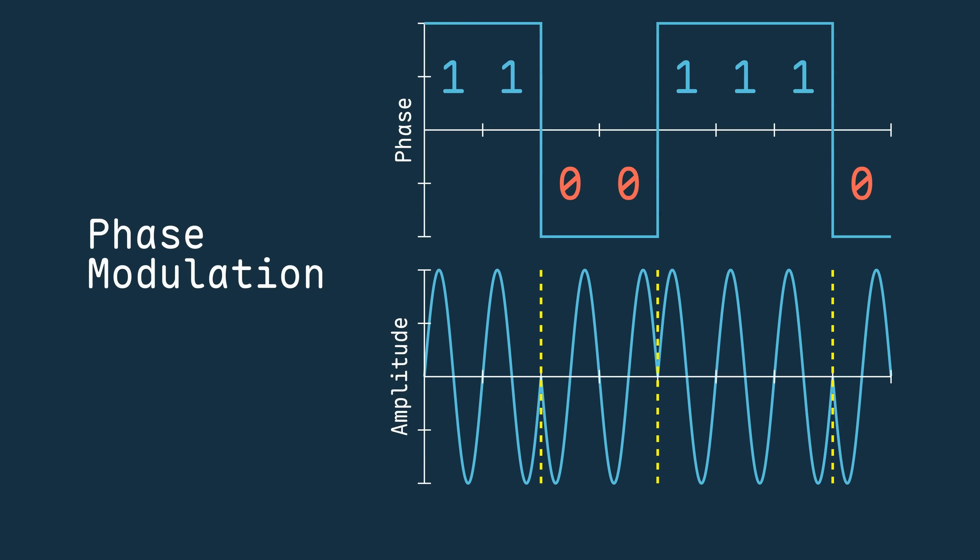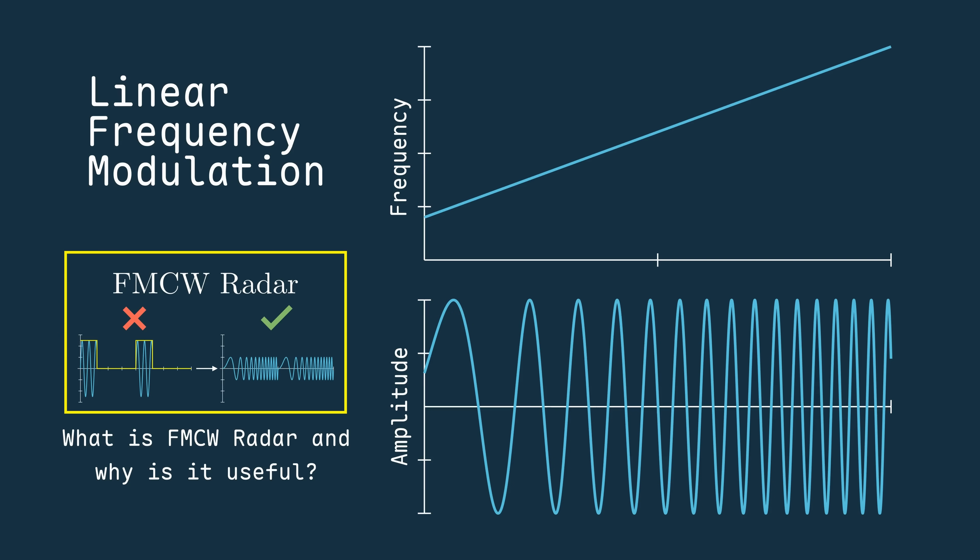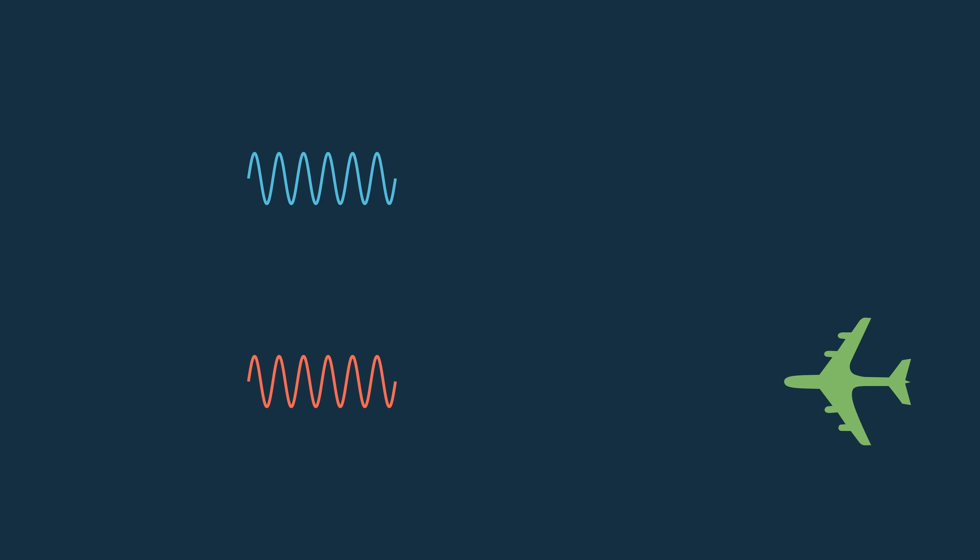But we'll get back to how the frequency affects our detection in a minute. For now, let's stick with linear frequency modulation. Now that the signal we're transmitting and receiving has some sort of structure, we can overlay the two and see that at some point, the two very closely overlap.